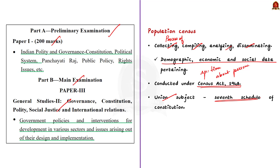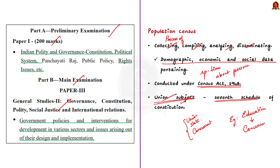Don't get confused here. You don't have to remember each and every topic and whether it comes under union, state or concurrent list. Just remembering the important ones will help you enrich your mains answer. There is an easy way to remember this. For example, education comes under the concurrent list. Both state and centre can make laws regarding education, and that is why it comes under concurrent list. Similarly, population census is a union subject because population is spanned across the entire territory of India, so it comes under the union list.